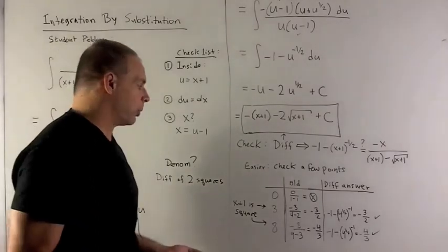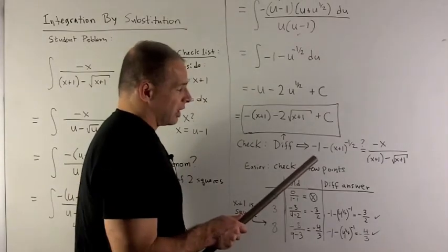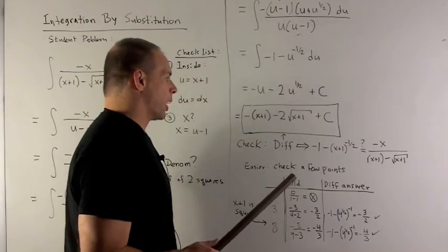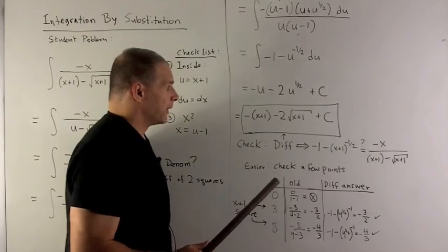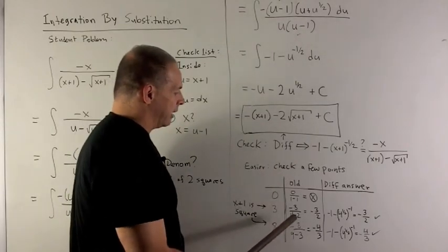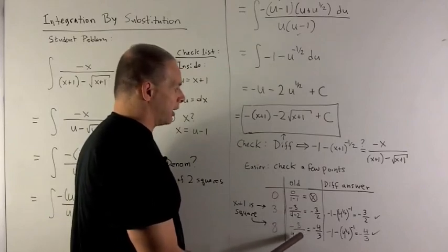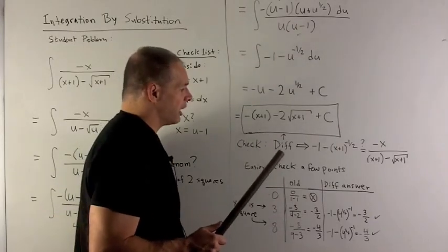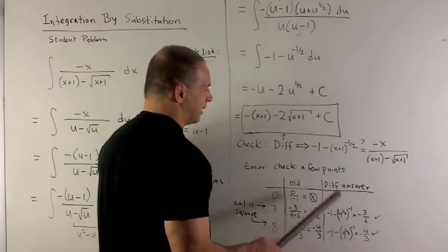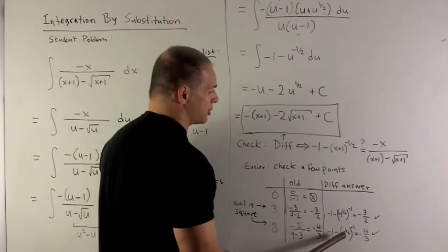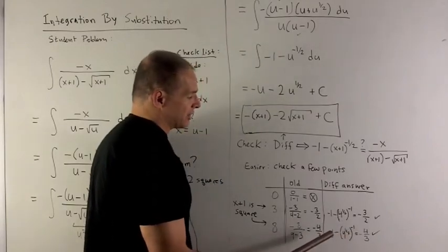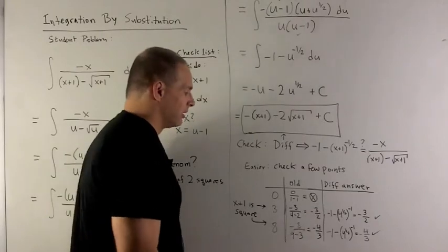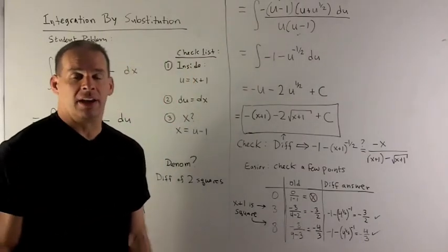Just to be sure we didn't get lucky, let's check another point. I'll use x equals 8, since 8 plus 1 is 9 and the square root of 9 is 3. In the original function: minus 8 over 9 minus 3, giving minus 8 over 6, which is minus 4 thirds. In the derivative of our answer: minus 1 minus 9 to the minus one-half. The square root of 9 is 3, and 3 to the minus 1 is one-third, giving minus 1 minus one-third, which is minus 4 thirds. They agree again, so odds are very good that I have the right answer.